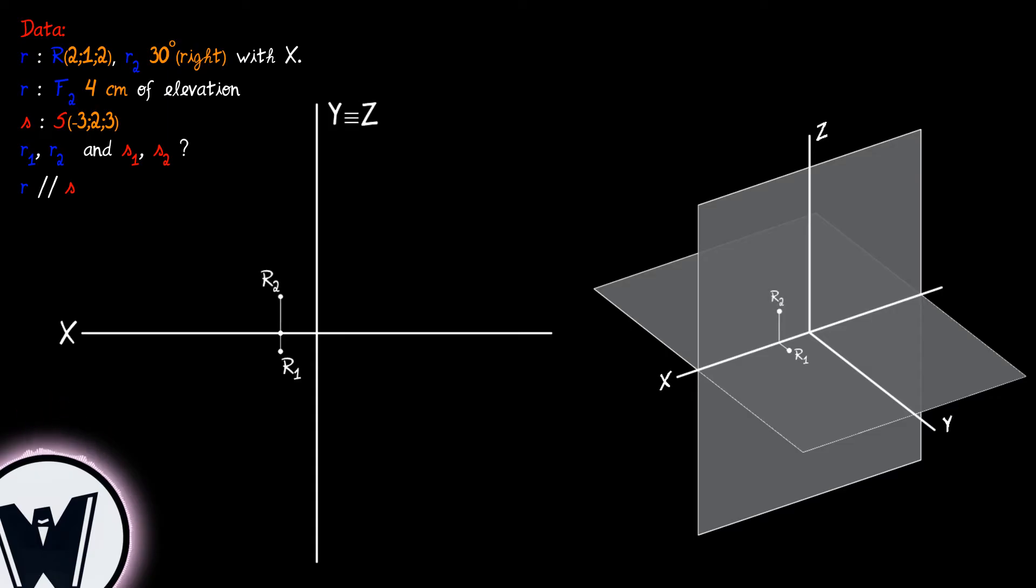We know the direction of the frontal projection of R, so on the frontal projection of point R, R2, we draw the angle of 30 degrees to the right, obtaining the frontal projection of the straight line R, R2.